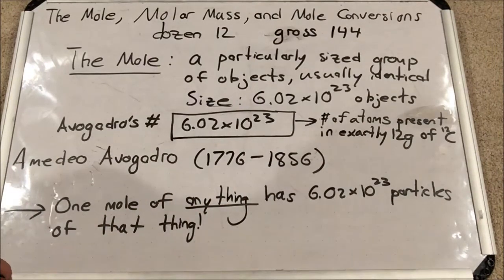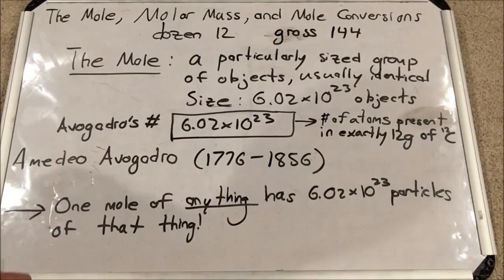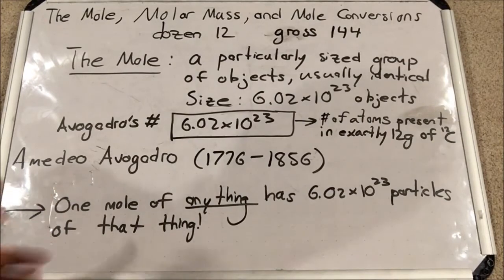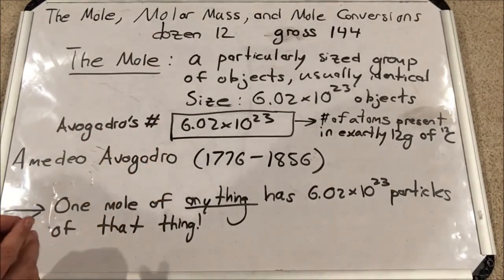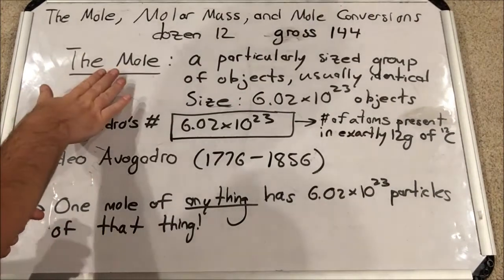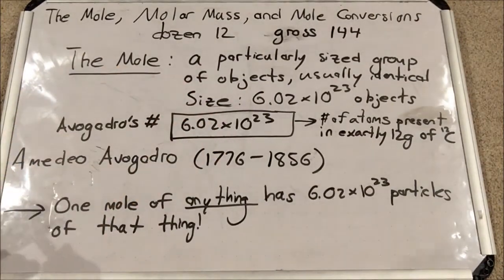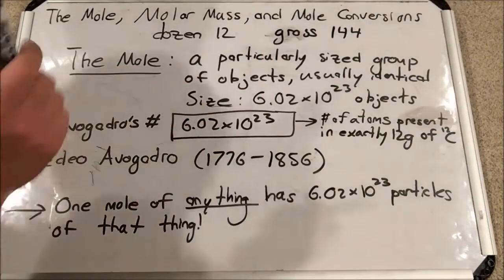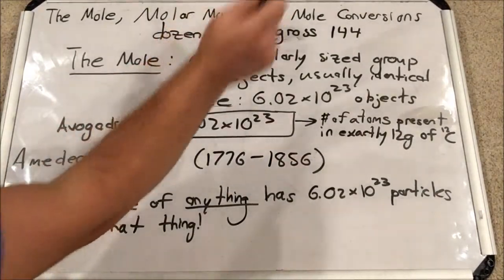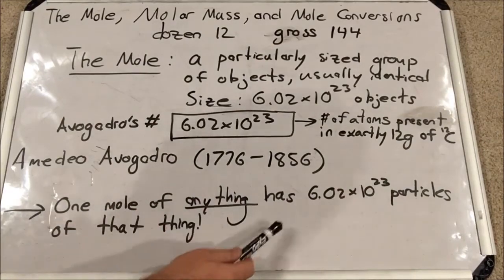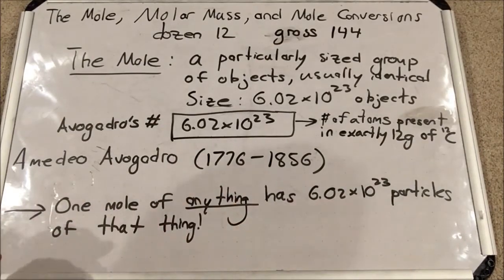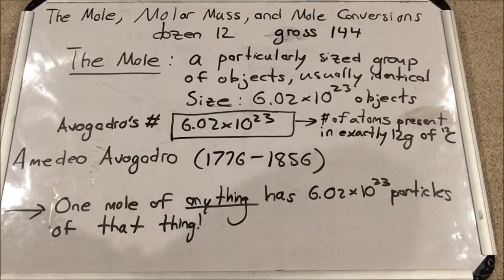Carbon-12 means carbon with 12 protons plus neutrons in its nucleus. So if I have 12 grams of carbon-12, I have exactly Avogadro's number of atoms — or a mole of atoms of carbon-12 in that sample. I can make a dozen of anything, a gross of anything, a mole of anything, but it has to have 6.02 times 10 to the 23 particles to be called a mole.